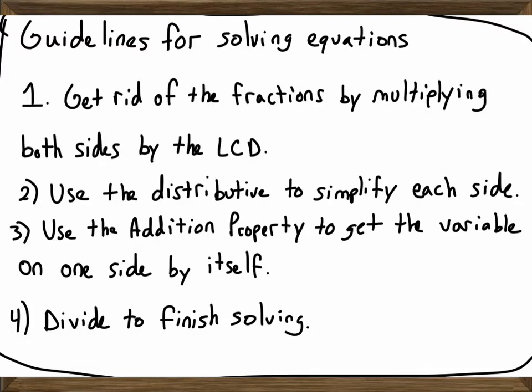At that point, we might have some simplifying to do. There may be some like terms to put together. So we go ahead and simplify — we simplify each side, combine like terms, and if there's any multiplying we need to do, we go ahead and do that.